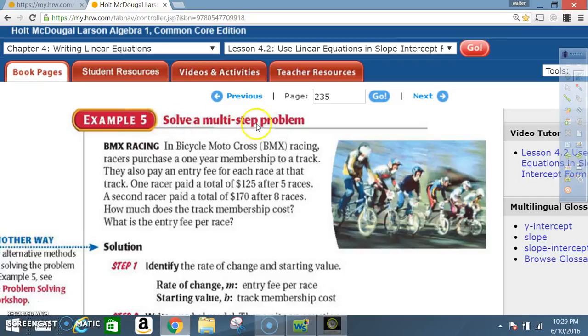Example 5. Solve a multi-step problem. BMX racing. In bicycle motocross, BMX racing, racers purchase a one-year membership to a track. They also pay an entry fee for each race at the track. One racer paid a total of $125 after five races. A second racer paid a total of $170 after eight races. How much does the track membership cost? What is the entry fee per race?